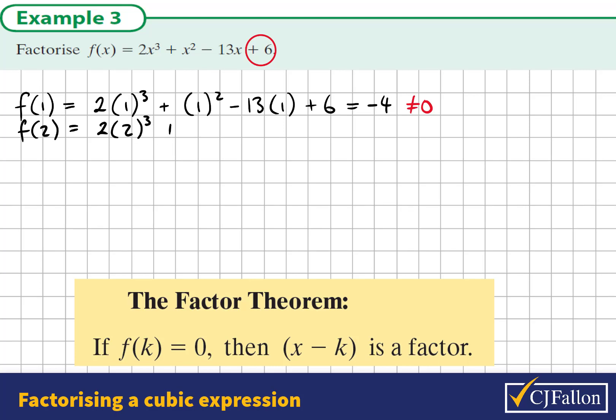So we have 2 times 2 cubed, plus 2 squared, minus 13 times 2, plus 6. When we substitute these values in we see it does work. Here we're getting 16 plus 4 minus 26 plus 6, and it all adds up to zero.